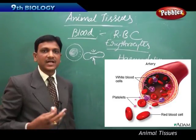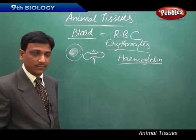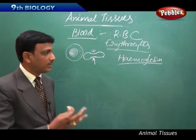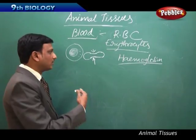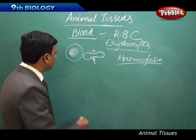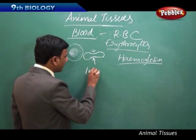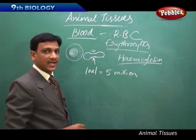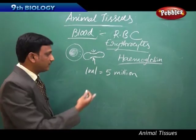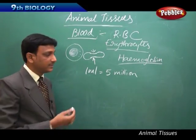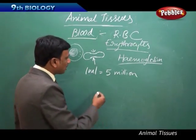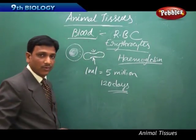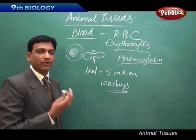Red blood cells are able to transport oxygen to different parts because hemoglobin has an oxygen-binding nature. If you take 1 ml of blood, you will find 5 million red blood cells — they are very small. Each RBC lives for 120 days. After the formation of RBC, it lives in the blood for 120 days; new RBCs are continuously formed in the body every day.